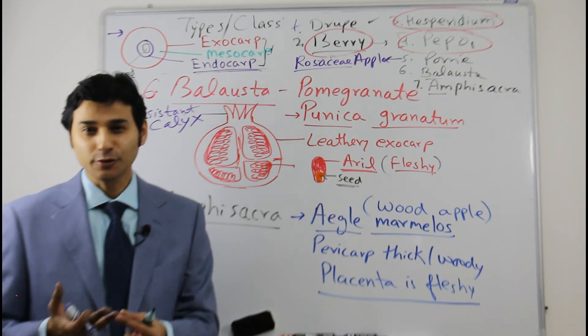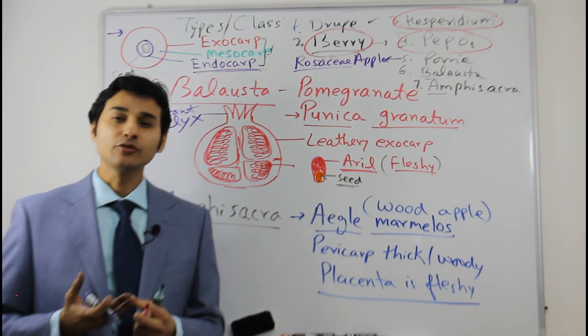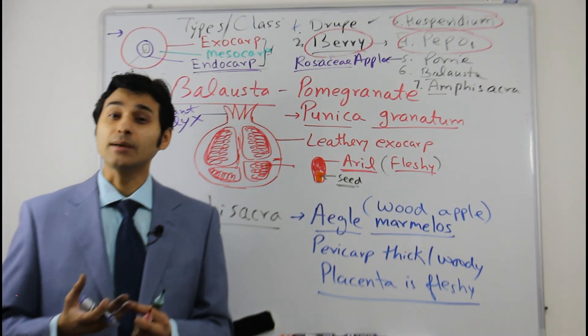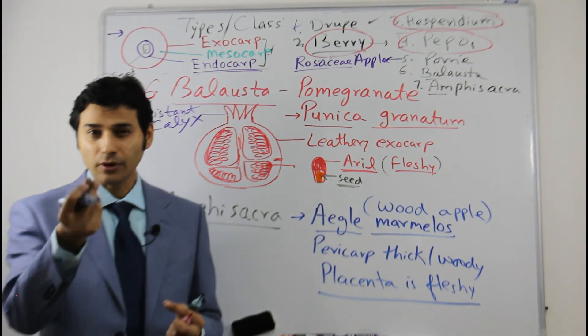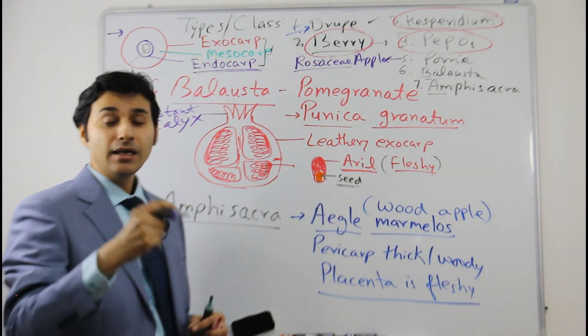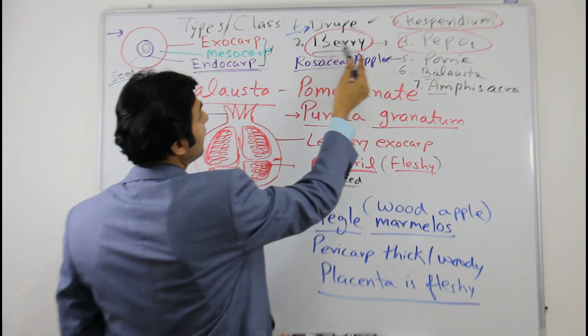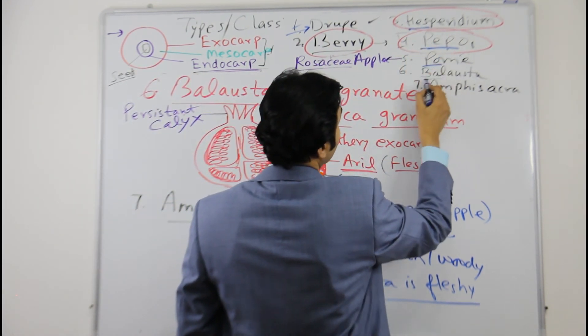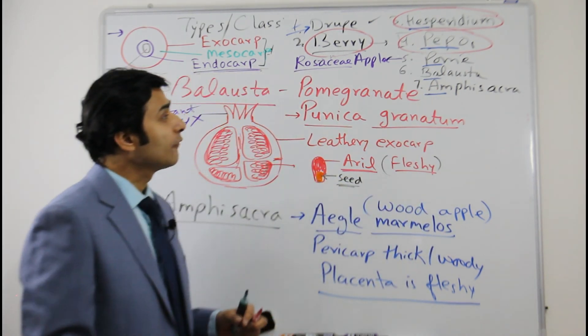And as I told you how to remember that - because you know juicy means juice. The fruit has juice. Juice comes out drop by drop, so from drop you can remember like drupe. And then berry has people, and then pome and balusta we have covered.